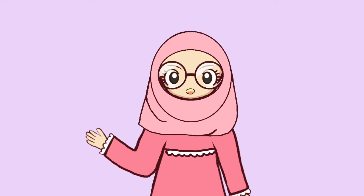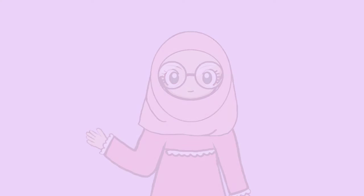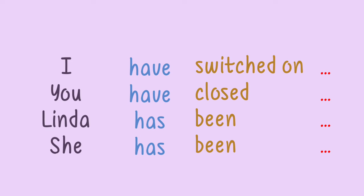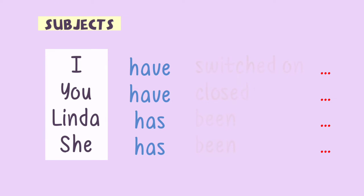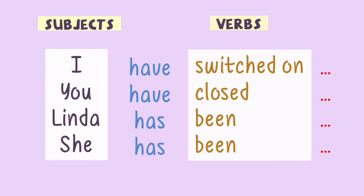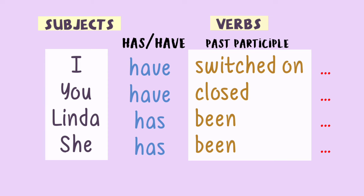Now let's pay attention to the verbs in the present perfect tense. These are the subjects and these are the verbs — they have the same pattern. They use has or have, and then the past participle of the verb.